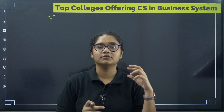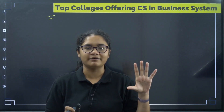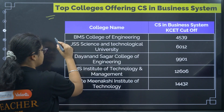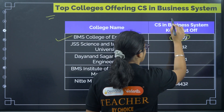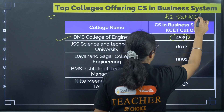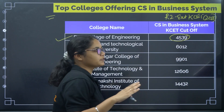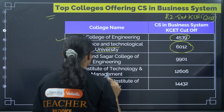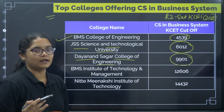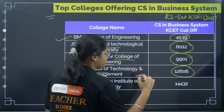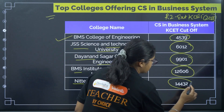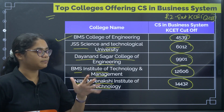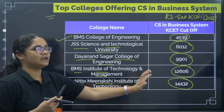Here are the top five colleges offering computer science in business system with their round two extended KCET cutoff ranks for 2023: BMS College of Engineering at 4539, JSS Science and Technology University at 6012, Dayananda Sagar College of Engineering at 9901, BMS Institute of Technology and Management at 12,606, and Nithya Meenakshi Institute of Technology at 14,432.